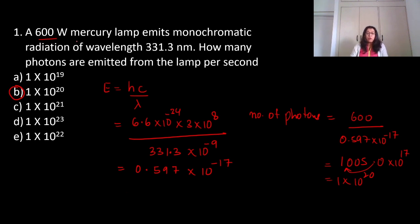Question number 1: A 600 watt mercury lamp emits monochromatic radiation of wavelength 331.3 nanometers. How many photons are emitted from the lamp per second? This is a very common question which you can get in NEET. We need to calculate E using hc upon lambda. h equals 6.6 into 10 raised to power minus 34 into 3 into 10 raised to power 8, and lambda is 331.3 nanometers, which is 331.3 into 10 raised to power minus 9 meters.